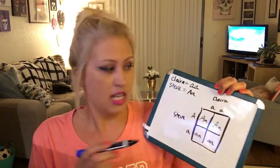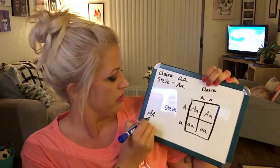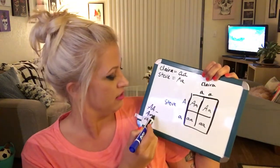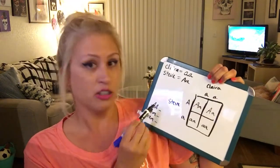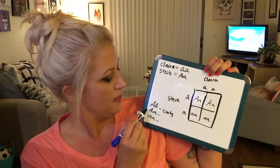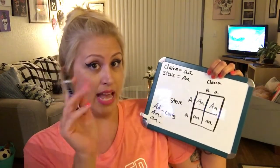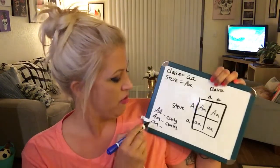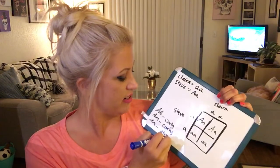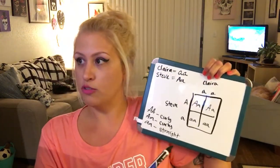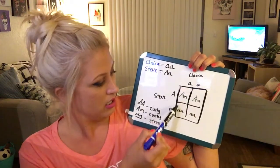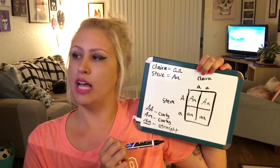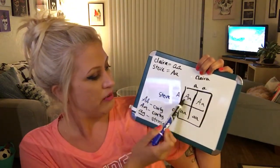Remember, for the straight hair versus curly hair example: homozygous dominant means curly-curly, so curly hair; heterozygous is curly plus straight, but curly masks the straight, so curly hair; and homozygous recessive is straight-straight, nothing to mask it, so straight hair. Going back to the questions: 50% have straight hair, and 50% will have curly hair.